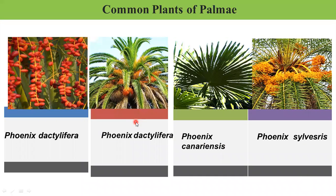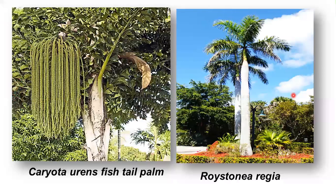These are pictures of some plants belonging to family Palmae. Phoenix dactylifera — you can see the plant and its fruits, this is the Kharjura. Phoenix canariensis — you can see huge fan-like leaves; this plant is grown as an avenue tree. Phoenix sylvestris — in Kannada it is called as 'echilimera'; the fruits are edible, and from this plant nira is extracted, and also toddy is extracted. Caryota urens, commonly called fish tail palm, and Roystonea regia, also called royal palm, are plants grown as avenue trees.